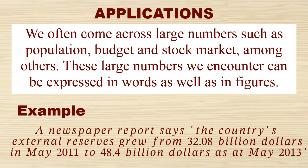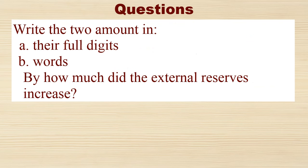Example: A report says the country's external reserve grew from $32.8 billion in May 2011 to $48.4 billion as at May 2013. The questions are: write the two amounts in A, their full digits, B, words, and by how much did the external reserves increase. Solution.